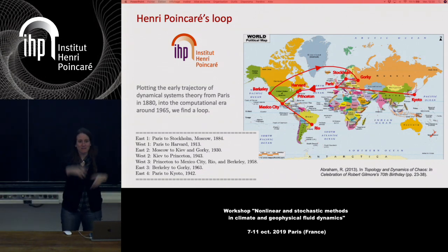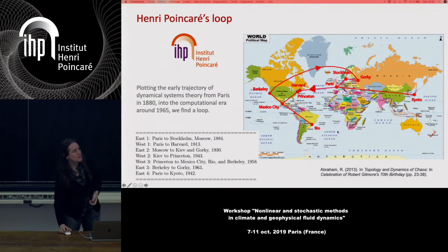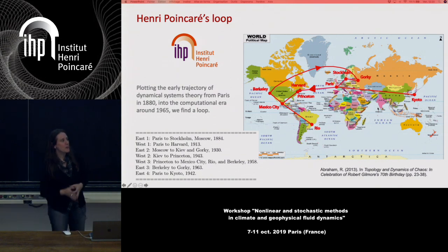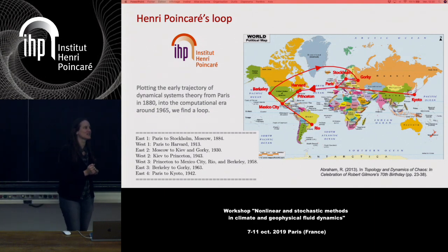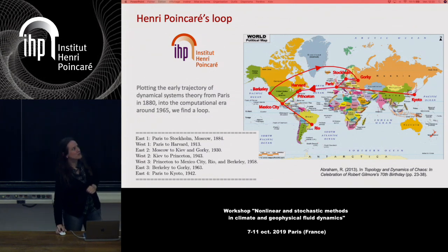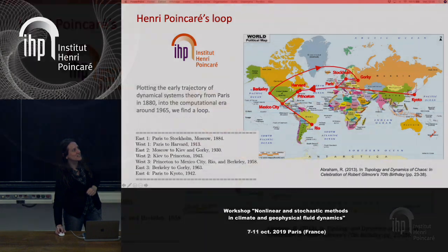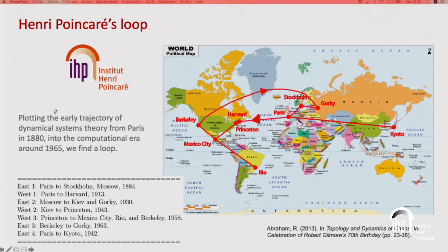As I am the last speaker of the conference, and we come from different parts of the world, I have chosen an image from Christophe Letellier's book for Robert Gilmore's 70th birthday, showing that if you plot the early trajectory of dynamical systems theory from Paris in 1880 into the computational era around 1965, you find a loop. Thank you, and thank you to the organizers — it was a great workshop.